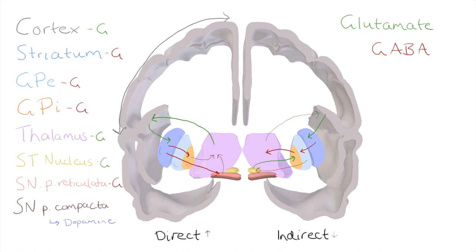The pars compacta functions to release dopamine, and it does that on the striatum. In the direct pathway, dopamine is released onto D1 receptors of the striatum, and the functional outcome is an excitatory signal — increased activity of the striatum, increased GABA output, which leads to an increased excitatory signal to the cortex, the essential function of the direct pathway. In the indirect pathway, dopamine is released on D2 receptors, which has an inhibitory effect. An inhibited striatum in this case reduces the inhibition of the thalamus. So on both sides, what we see is an increased excitatory output as a result of dopamine release from the substantia nigra pars compacta.